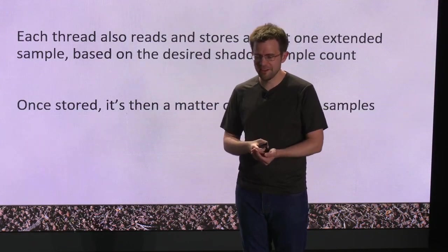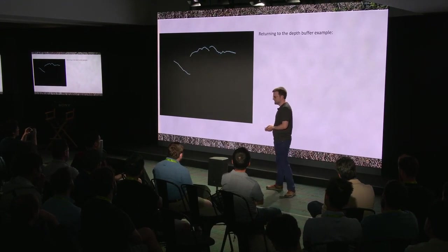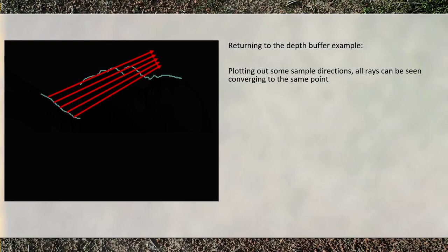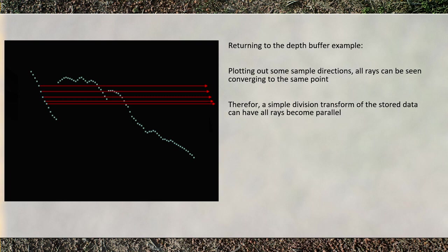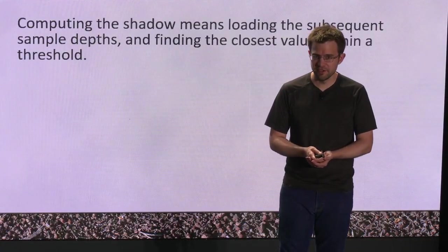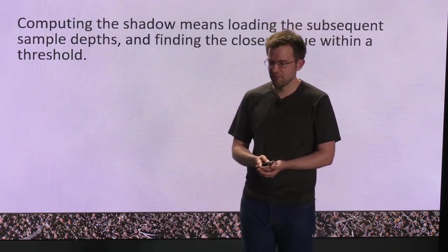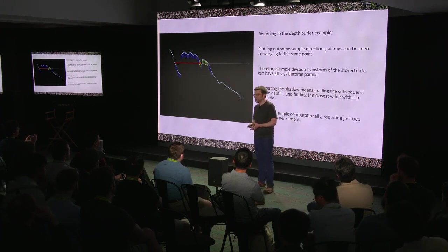Once it's in the local data store and group shared memory, we just pick a starting point and iterate forward. If we overlay the light directions, another optimization becomes apparent: all these rays target the exact same point. If we apply a simple division transformation, we can reorientate the data so all rays are parallel. This makes the sampling problem even simpler — you pick your starting value, iterate forward, and it boils down to only a couple of instructions per sample including loading the data, to produce your shadow term.